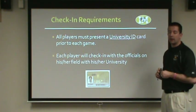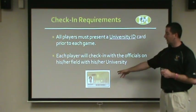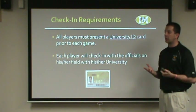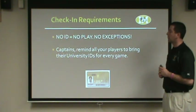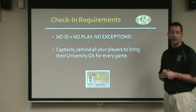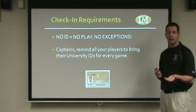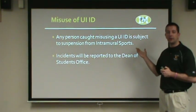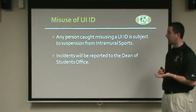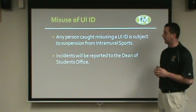When you get to the Hawkeye Softball Complex, you're going to present a university ID card. Each player will present that to our staff and check in. Every player is going to do that with the official or supervisor to check in on site. They need to have that in order to play — no ID equals no play and there's no exception. Please remind all your players every time they leave for a game to bring their university ID card. If someone participates by misusing an ID card or falsifying their identity, that is a suspension from intramural sports for one calendar year.